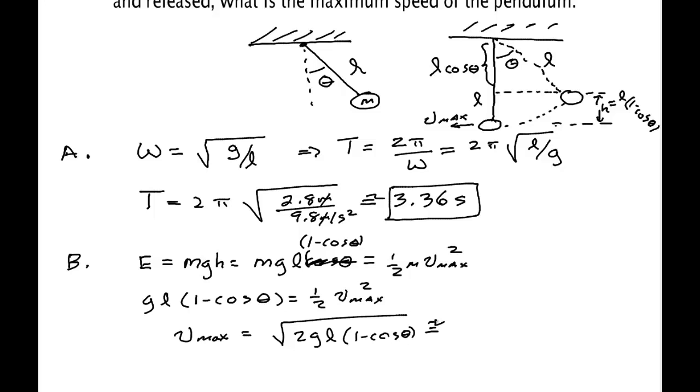And that's 0.951. Multiply that by minus one, then add it to one, and then multiply it by 2.8. And you find that this distance here that it dropped was 0.137 meters. You then multiply that by 9.8, multiply that by 2, and take the square root. And you get 1.64 meters per second.